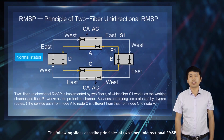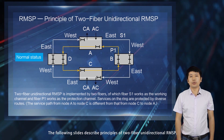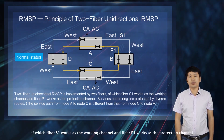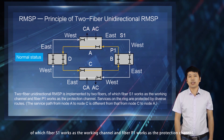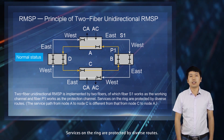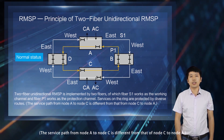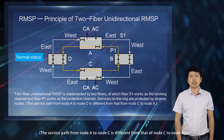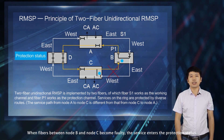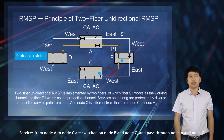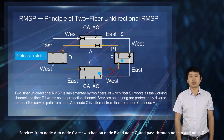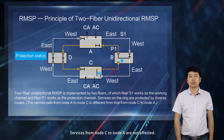The following slides describe principles of two-fiber unidirectional RMSP. Two-fiber unidirectional RMSP is implemented by two fibers, of which fiber S1 works as the working channel and fiber P1 works as the protection channel. Services on the ring are protected by diverse routes. The service path from node A to node C is different from that of node C to node A. When fibers between node B and node C become faulty, services from node A to node C are switched on node B and node C, while services from node C to node A are not affected.